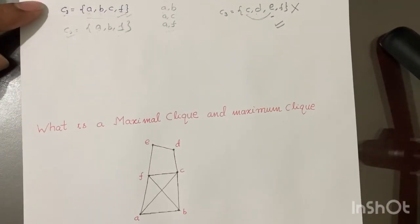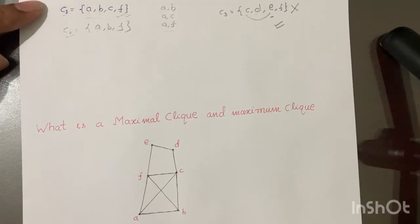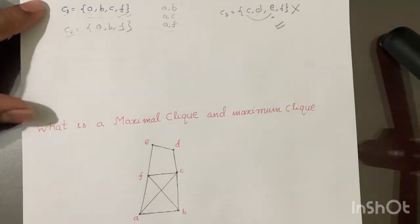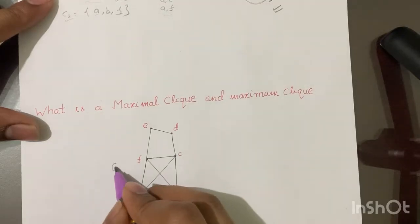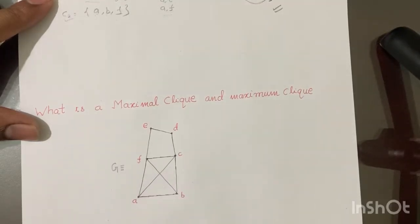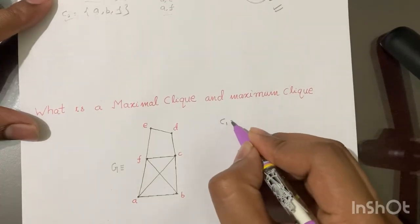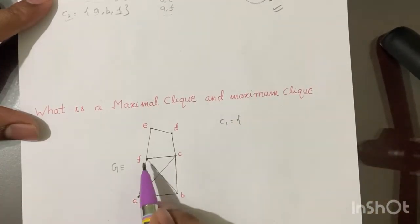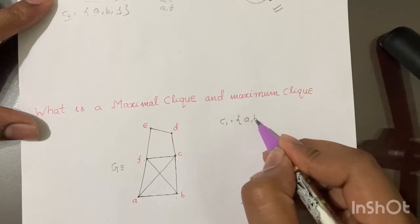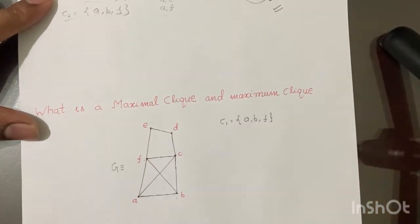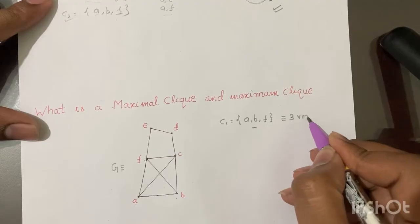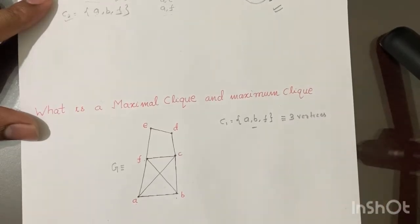That is, what is a maximal clique and a maximum clique? So let's say we have graph G here. Now you can easily identify a clique here. C1, let's say A, B, and F. How many vertices does it have? It has three vertices.